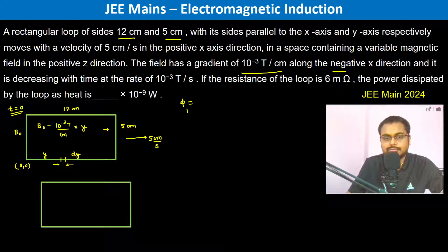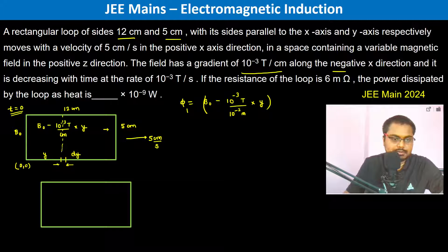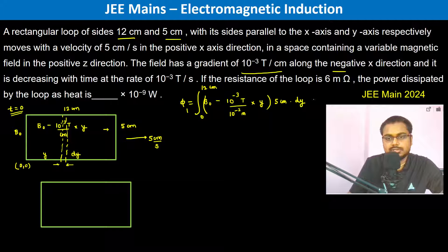So if we do B dot A, it's going to be B naught minus 10 to the power minus 3 tesla divided by centimeters, which is 10 to the power minus 2 meters, into y. The area of this strip is 5 centimeter into dy, and we integrate this from 0 to 12 centimeter. This gives us phi 1.